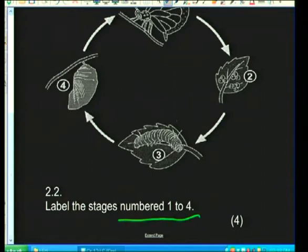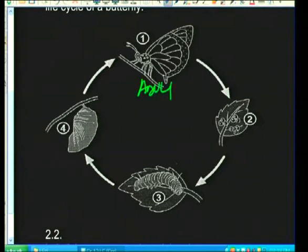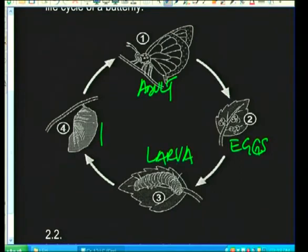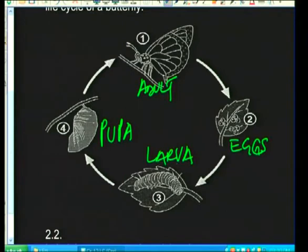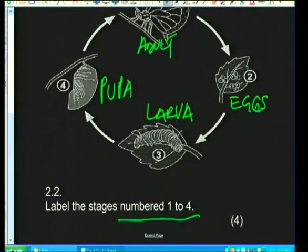Label the stages numbered one to four. One is the adult, two is the eggs, three is the larva (caterpillar), and four is the pupa. The adult lays eggs, the eggs hatch to form the larva, and notice that the larva and adult stages are totally different — this difference is already a clue that this is complete metamorphosis. The larva then develops into a pupa, from which a butterfly emerges.